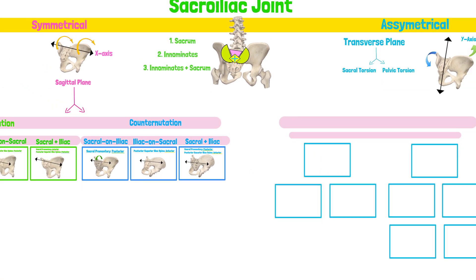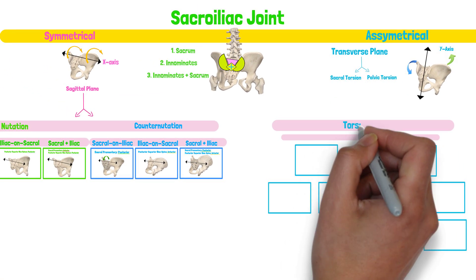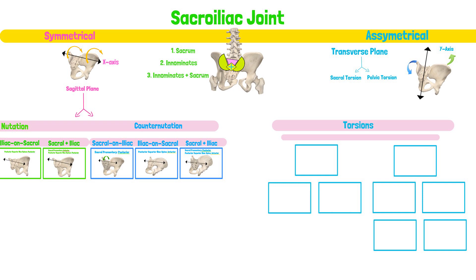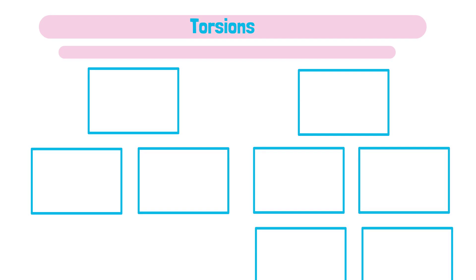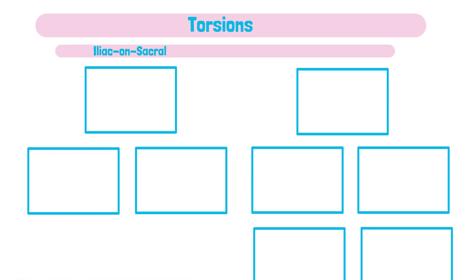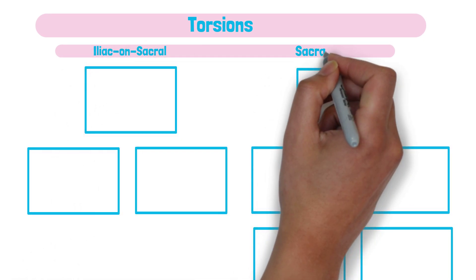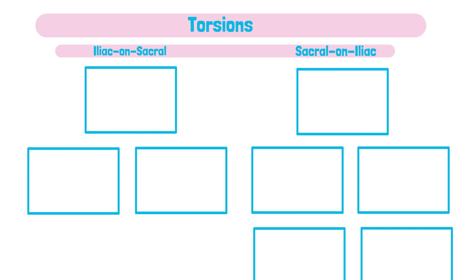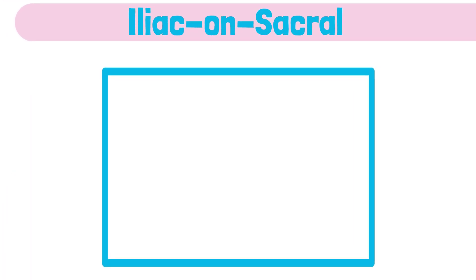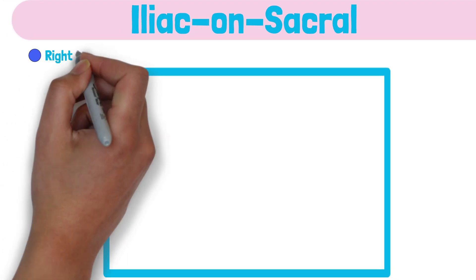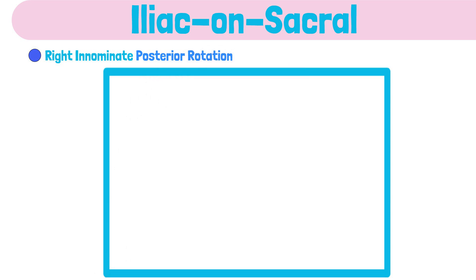Now let's take a look at the asymmetrical motions. They are referred to as torsions and occur around the oblique axis. Let's take a look at the iliac on sacral movement first. Remember, here the two innominates are moving in opposite directions.